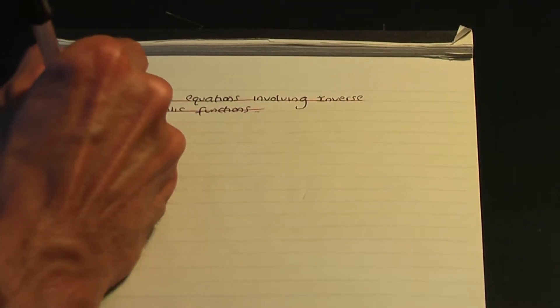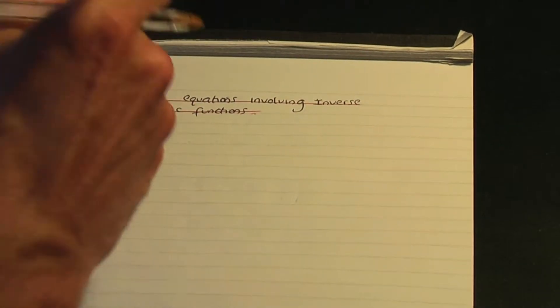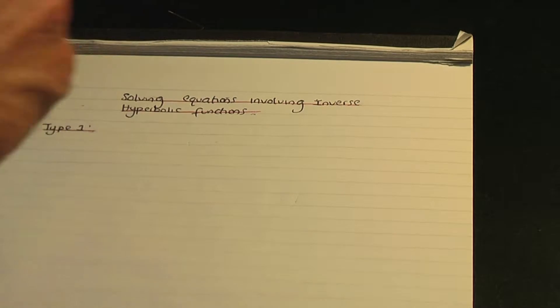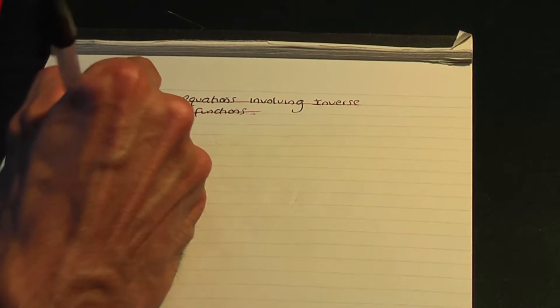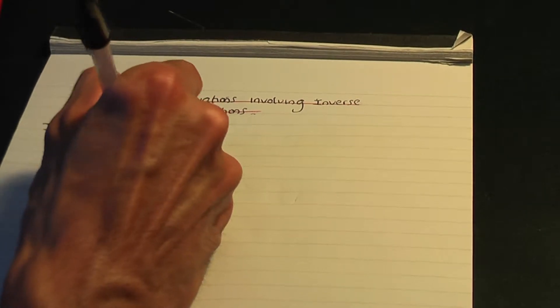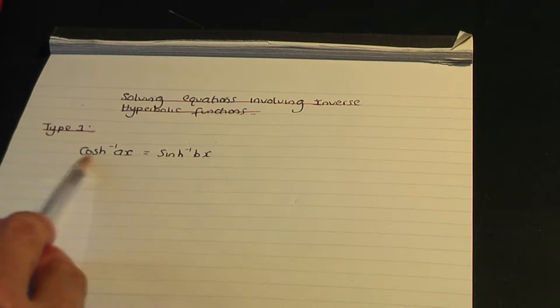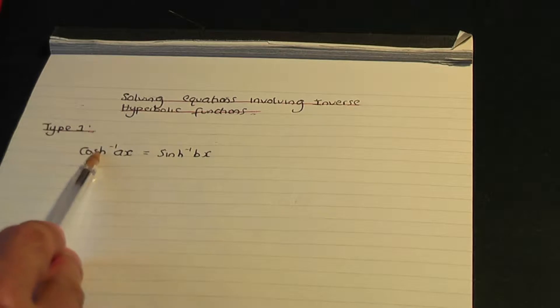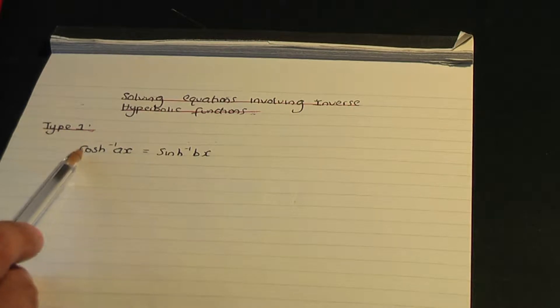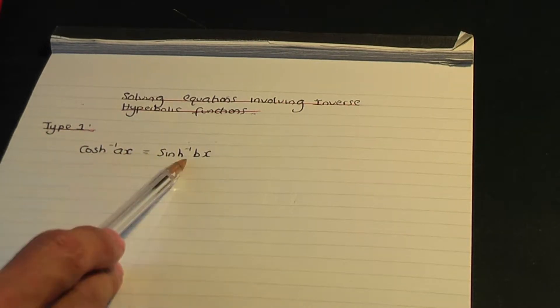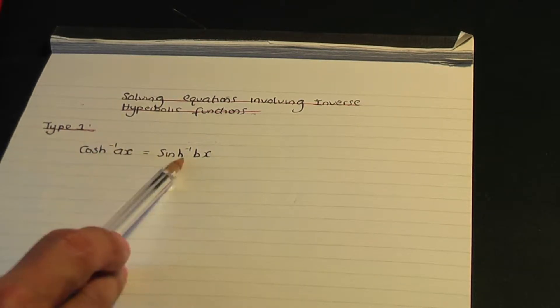Let me call this Case Type Number One. In the type one case, supposing you have an equation of this type: hyperbolic cos inverse of ax equals hyperbolic sin inverse of bx, where a and b are constants. If your equation contains a hyperbolic cos inverse and hyperbolic sin inverse function only, and is of this arrangement, here is how to solve it.